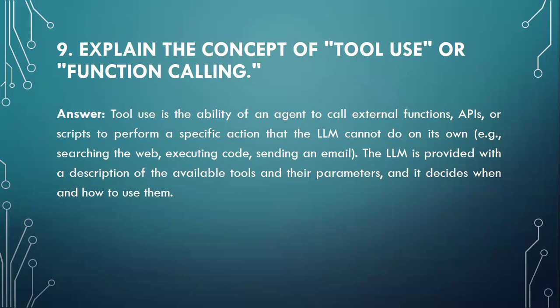Moving to question number nine: Explain the concept of tool use or function calling. Tool use is the ability of an agent to call external functions, APIs, or scripts to perform specific actions that the LLM cannot do on its own — for example, searching the web, executing code, or sending an email. The LLM is provided with a description of available tools and their parameters, and it decides when and how to use them.